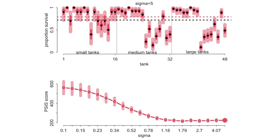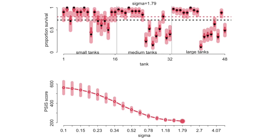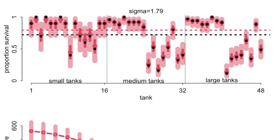Priors can do a lot to regularize estimates, and tighter priors often give us better out-of-sample predictions even though they make the model fit the sample worse. However, if the prior is too tight, that's also bad — or even much worse, as in this case. The best values are right around 1.8, though there's a plateau around there. This is the value that maximizes our out-of-sample accuracy — a good regularizing value.